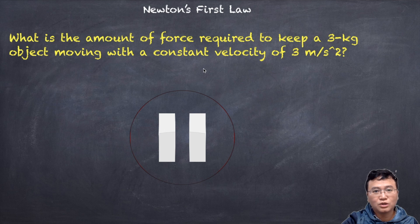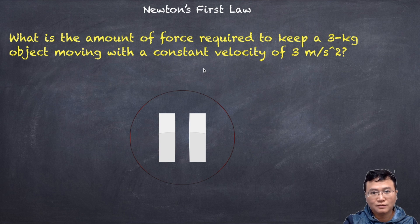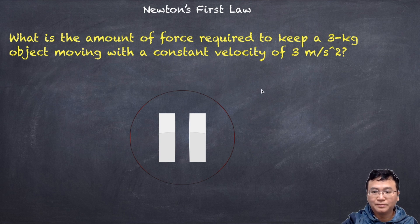This is also according to Newton's first law: an object in motion stays in motion, and an object at rest stays at rest, unless a net force acts on it. So the net force is still zero — it just means that the object is moving at a constant velocity.